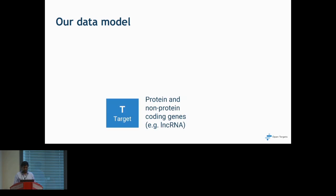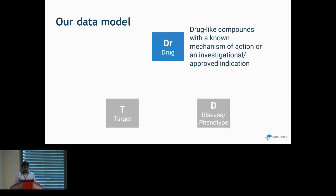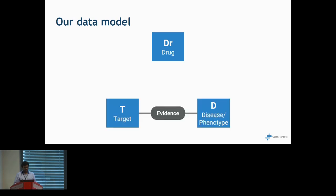To understand our data model, we have three different entities. The first is the target, which we define as a naturally occurring molecule that can be targeted by a medicinal product — we use EBI's Ensembl database for this. The second entity is the disease or phenotype, for which we use the Experimental Factor Ontology, covering rare and common diseases. The third entity is drug-like molecules — we use EBI's ChEMBL database, defining these as any bioactive molecules with drug-like properties. The true power of the platform lies in connecting evidence and analyzing associations between the target and the disease.